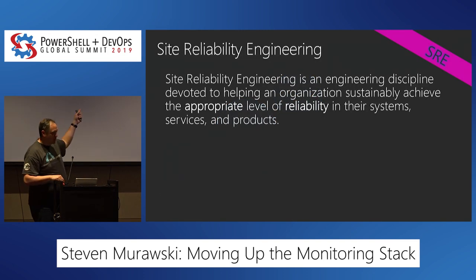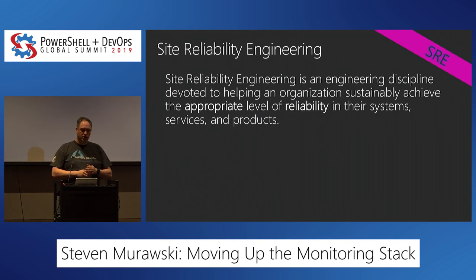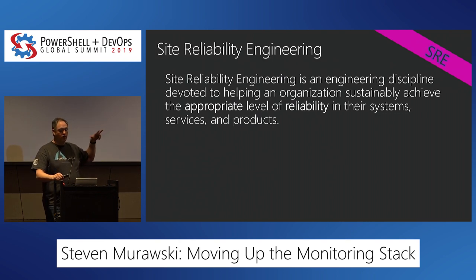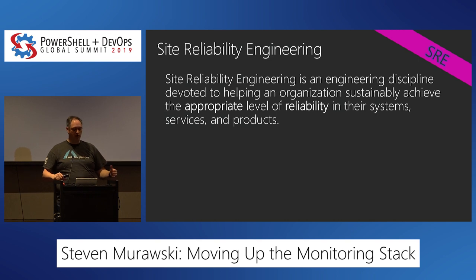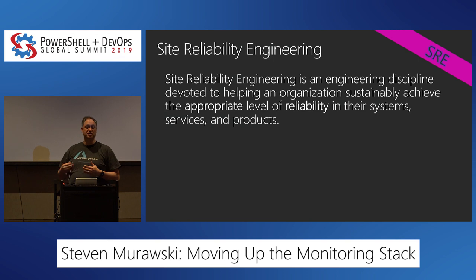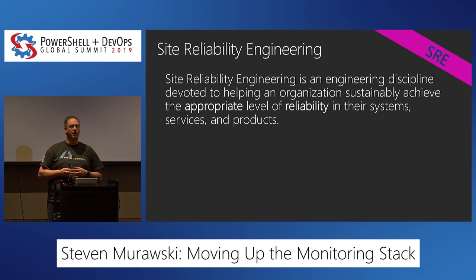What do I mean by site reliability engineering? There are three crucial words in the definition: reliability, appropriate, and sustainably. We're really going to focus on the first two — reliability and appropriate — in this talk, because they tie closely to why and what we want to monitor. The sustainably comes in when we talk about what we actually alert on, because we want to alert in a sustainable fashion so we don't burn out our people with alerts they can't do anything with.